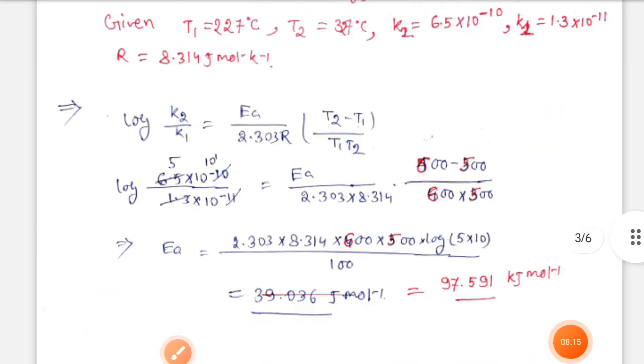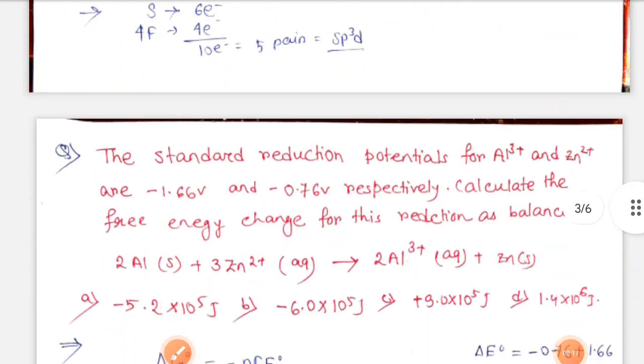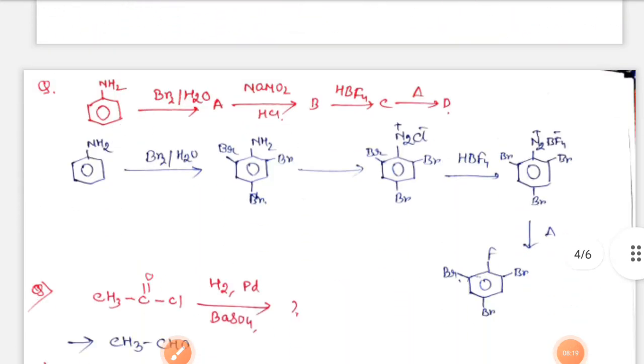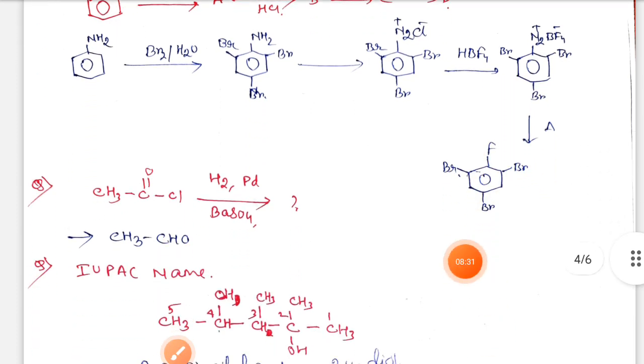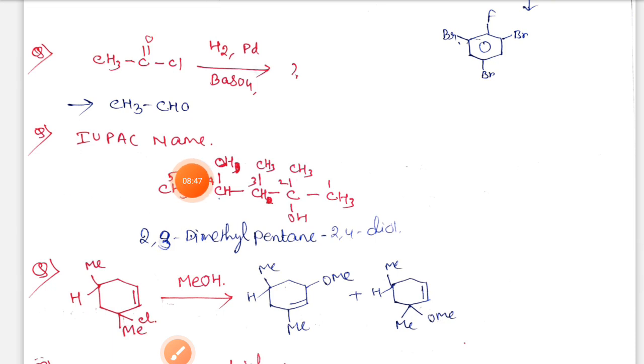Then if we give heat, N2+BF4- is released and fluorine attaches here. Next, CH3COCl with H2/Pd-BaSO4 - this is Rosenmund reduction, so CH3CHO is formed. Acid chloride converts to aldehyde.